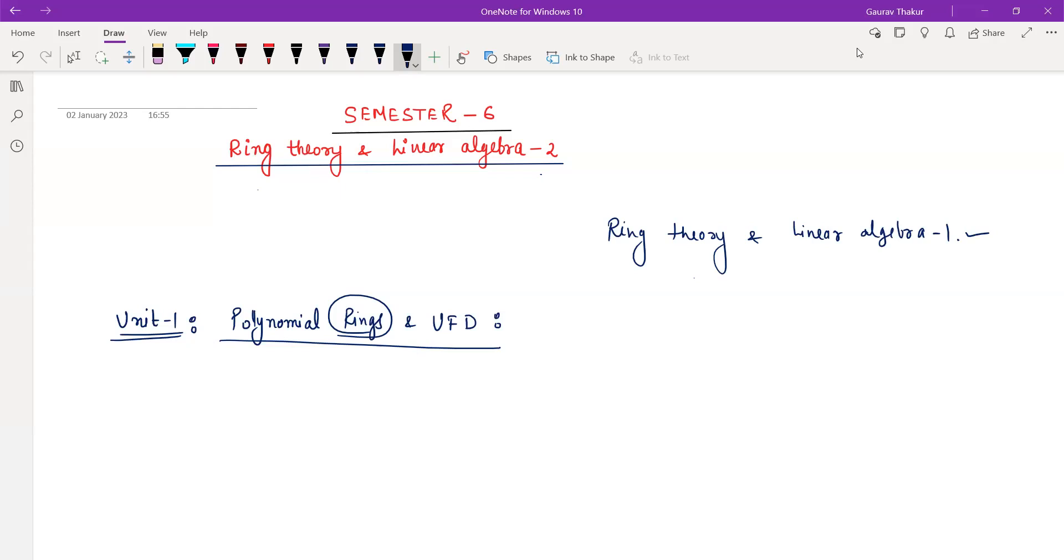And the book which we are going to use for this particular unit is the same book, Galleon, which you have used in semester 3. And chapters are chapter 16, 17 and 18. Alright.